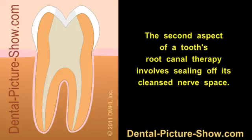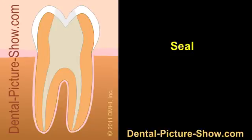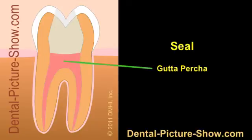Once the tooth has been disinfected, this cleanliness must be preserved. The dentist ensures this by creating a seal for the tooth's hollow interior. In most cases, the tooth is sealed using a rubber compound called gutta percha. Our video here on DentalPictureShow.com that describes the individual steps of root canal treatment provides an explanation about how it is placed.